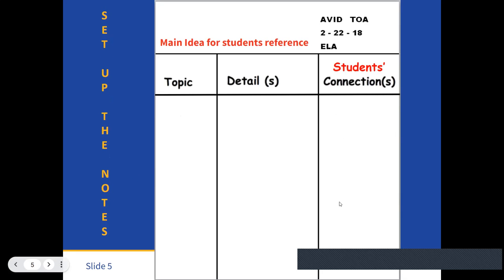When we begin taking the notes, we want to model that our name, our date, what we're working on, and then we want this to be the main idea for the students' reference. What will the student be using these notes for? And then the three columns. This is just a suggestion, but oftentimes teachers use topic, details, and then students' connections. How did the students make connections to this content?